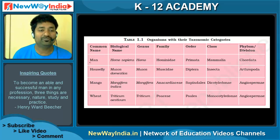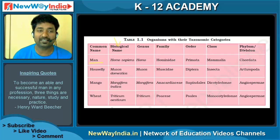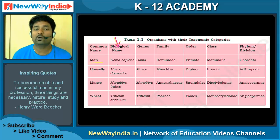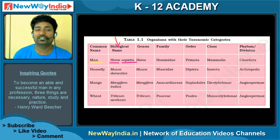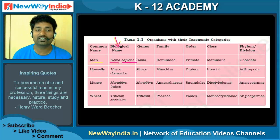For example, if you take man, the biological name is Homo sapiens. You especially need to remember these scientific names — these are called biological names or scientific names. Homo sapiens means indirectly that the species is sapiens and the genus is homo, that's why its scientific name or biological name is Homo sapiens.